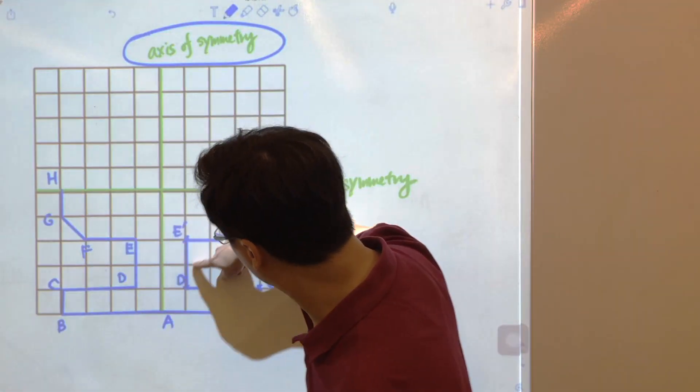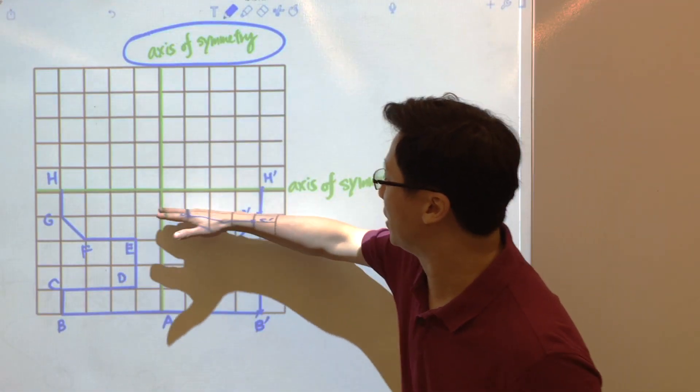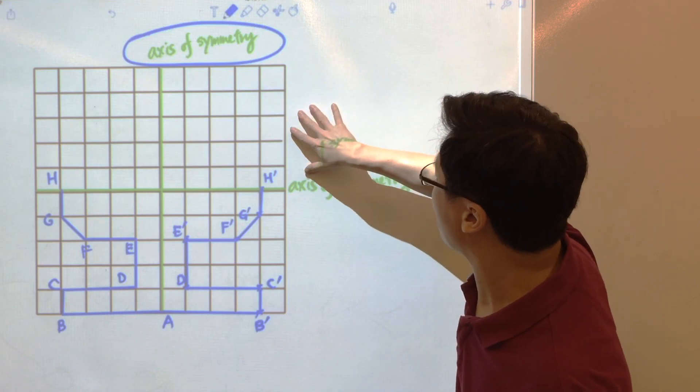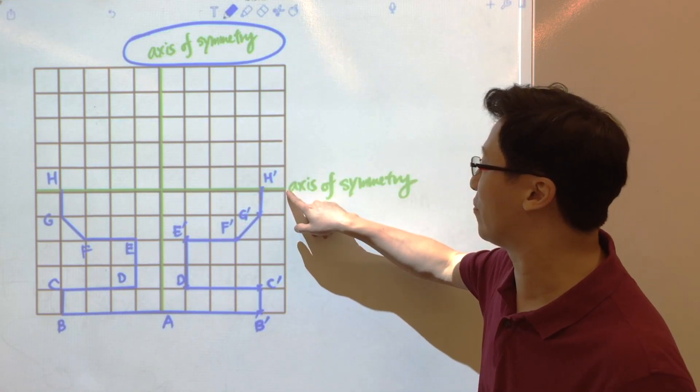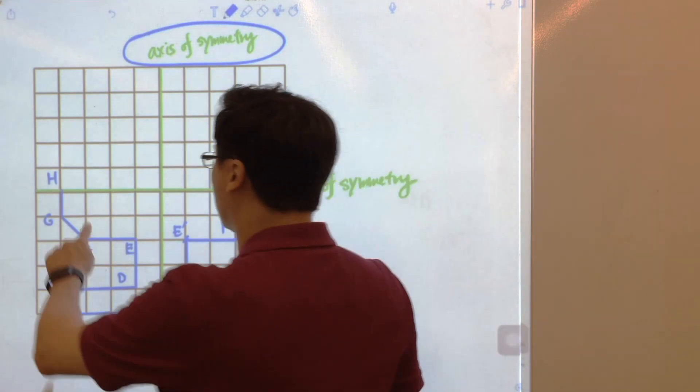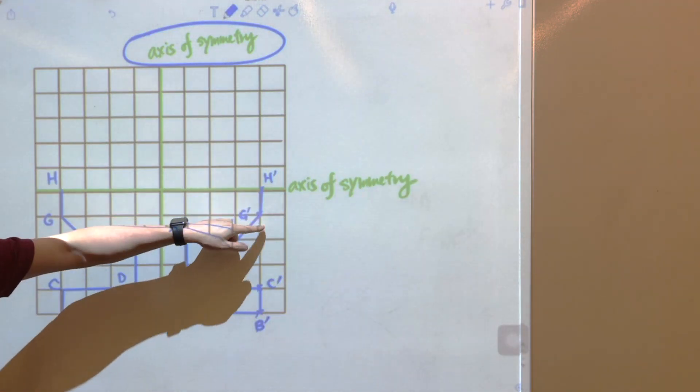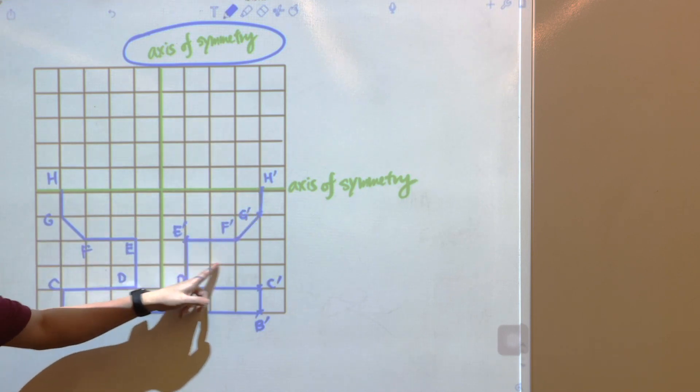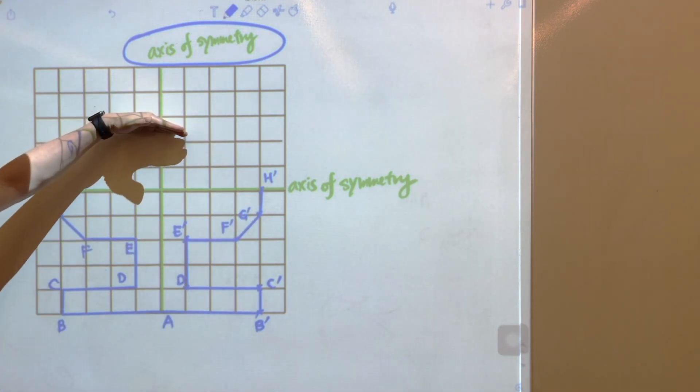And now we have this figure. But we have to still complete the whole picture because we have the second mirror, the second axis of symmetry. Again, these are all the dots, all the vertices, and we have to find the image of all these dots at the top.